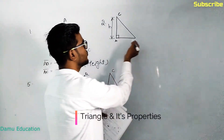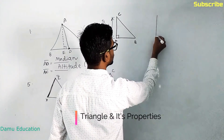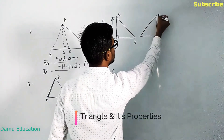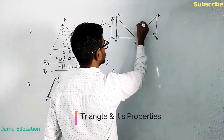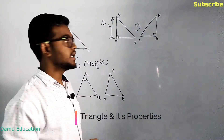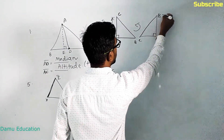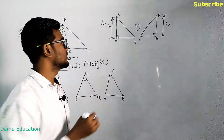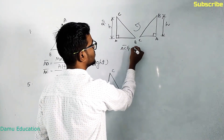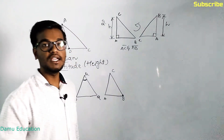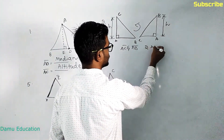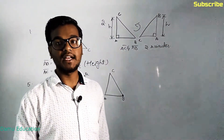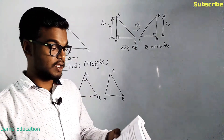If we rotate the triangle, then AB will become the altitude — the height. So here the heights are AC and AB. In a right angle triangle, the two sides act as the two altitudes of the triangle.